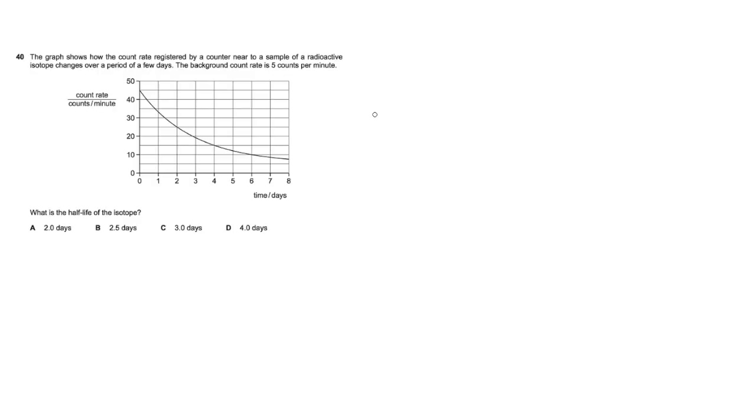So this is the last sum. It says that a graph here shows the count rate registered by a counter near to a sample of radioactive isotope. It says that they measure the change over a period of a few days, and it also says that the background count rate is 5 counts per minute. Now you could possibly make a very grave mistake here by not factoring the background rate, and I'll explain why in a second.